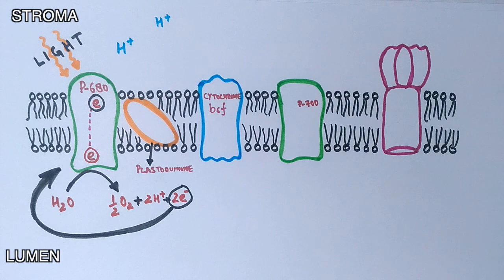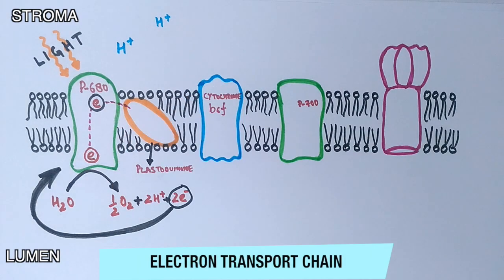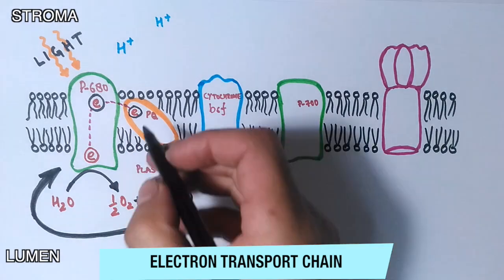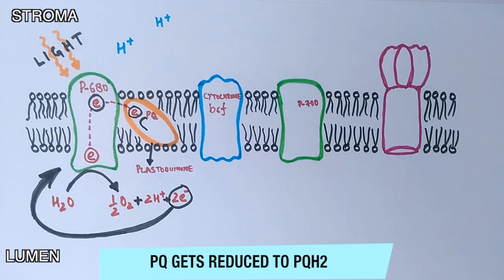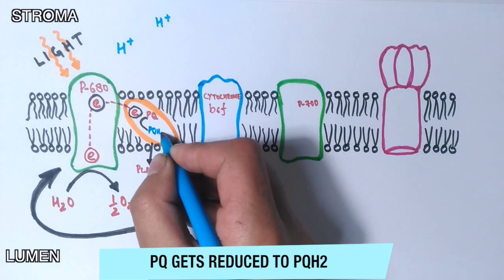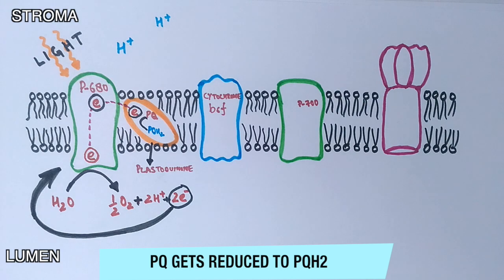After that, the electrons ejected from photosystem 2 are received by plastoquinone molecule. This plastoquinone molecule gets reduced when it accepts two electrons from photosystem 2 and two hydrogen cations from the stroma of the chloroplast, thereby forming plastoquinol PQH2.